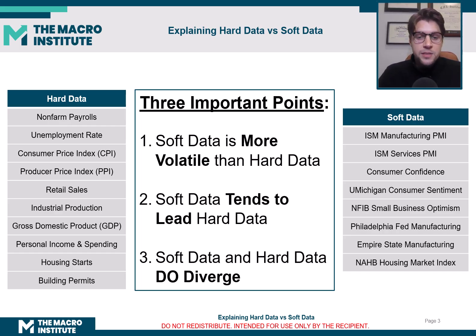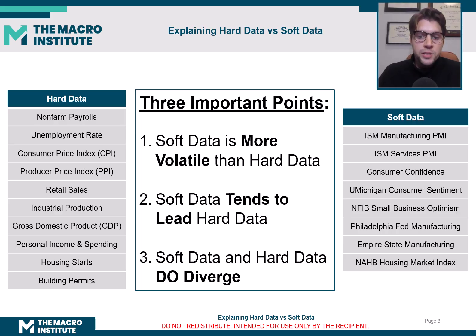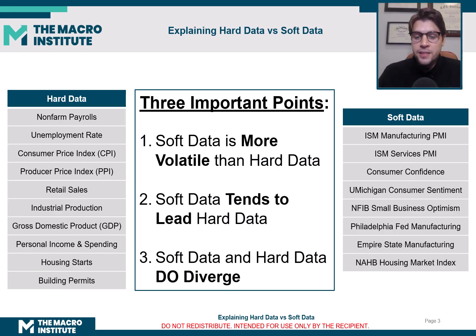GDP is a hard data point. We have housing starts — there's a bunch of hard data points. These are normally reported on a monthly or sometimes weekly basis by some sort of government agency. It's real, measurable economic data that actually happened.